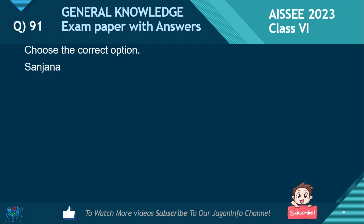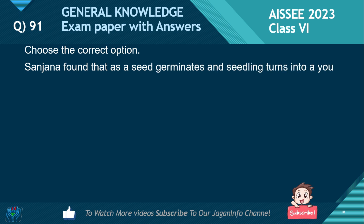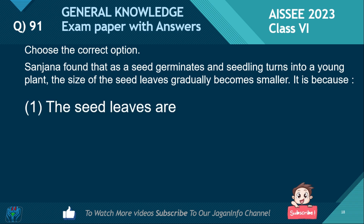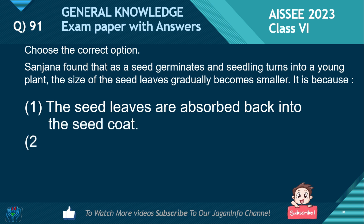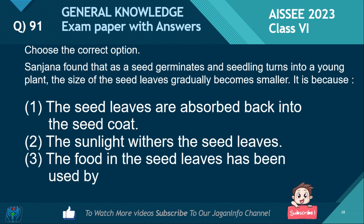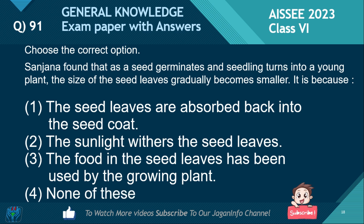Choose the correct option. Sanjana found that as a seed germinates and the seedling turns into a young plant, the size of the seed leaves gradually becomes smaller. It is because: the seed leaves are absorbed back into the seed coat; sunlight withers the seed leaves; the food in the seed leaves has been used by the growing plant; or none of these. The right answer is: the seed leaves are absorbed back into the seed coat.